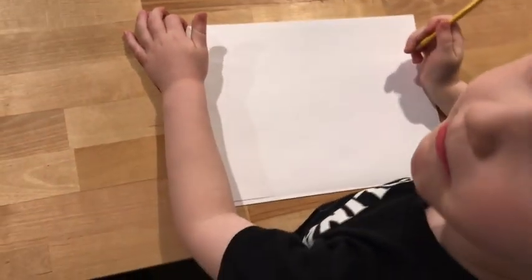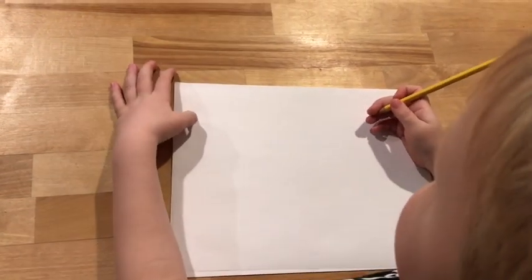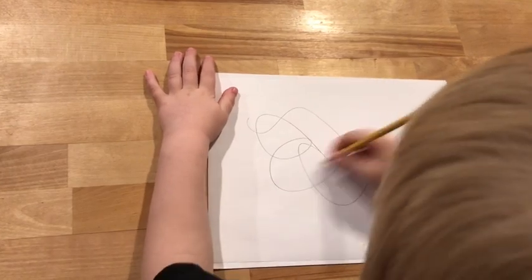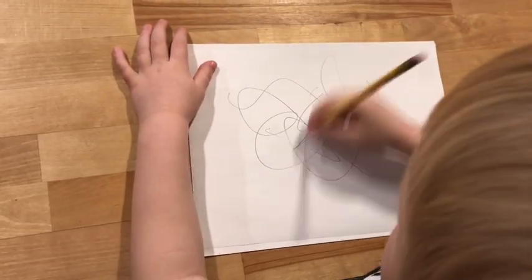So all you have to do to make a scribble drawing is to start making a bunch of scribbles on the paper. Go ahead, Will. Kind of like pretend a bunch of spaghetti just fell down on the page. Now stop!